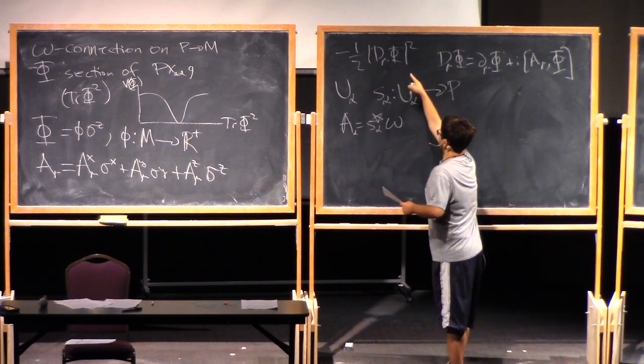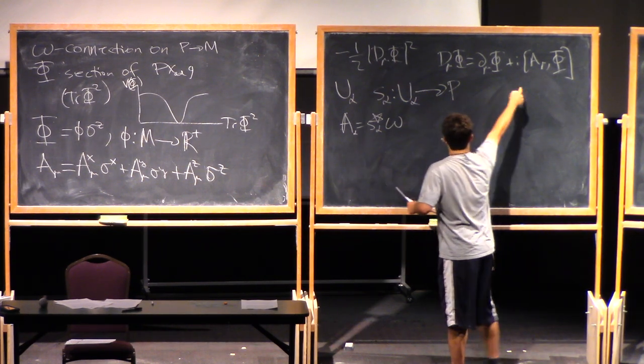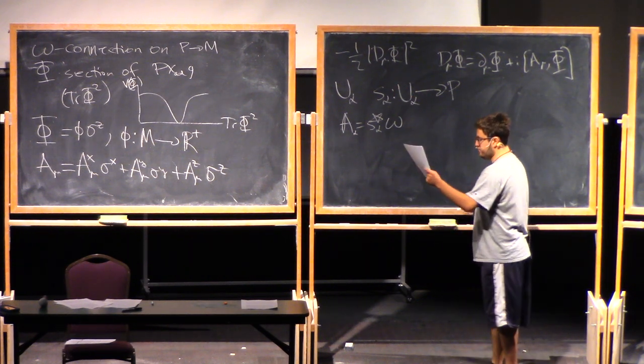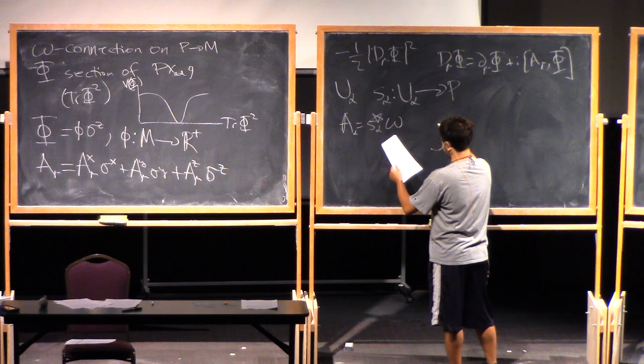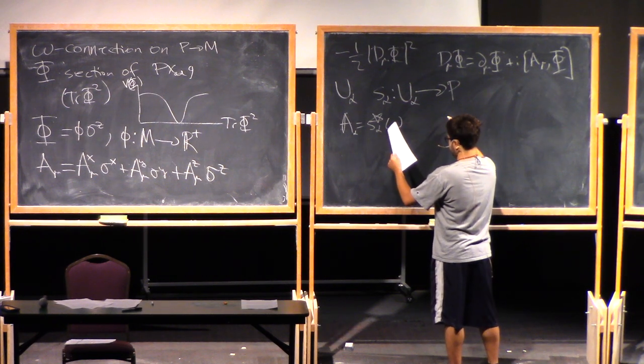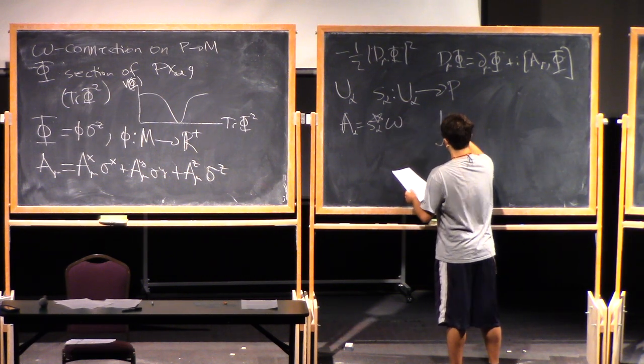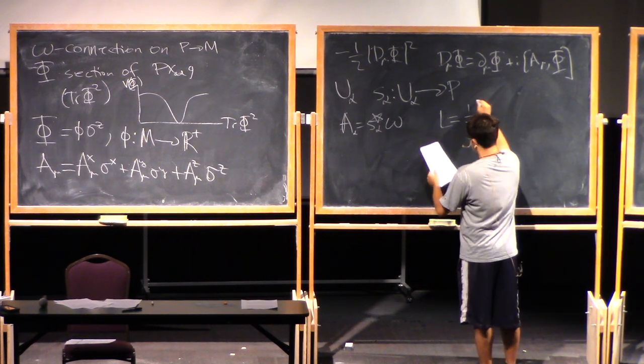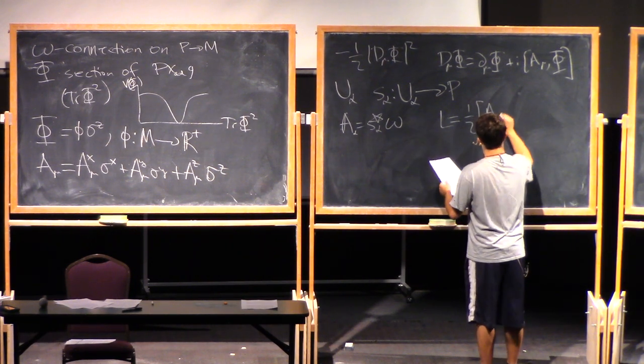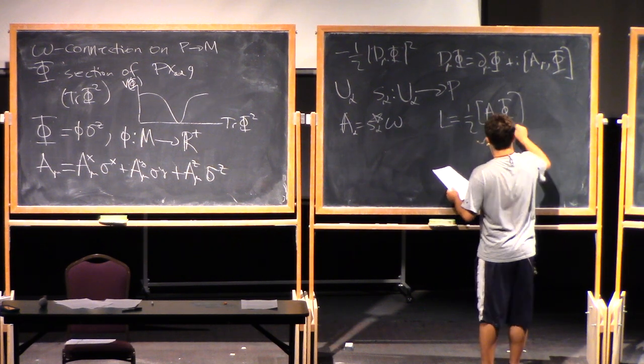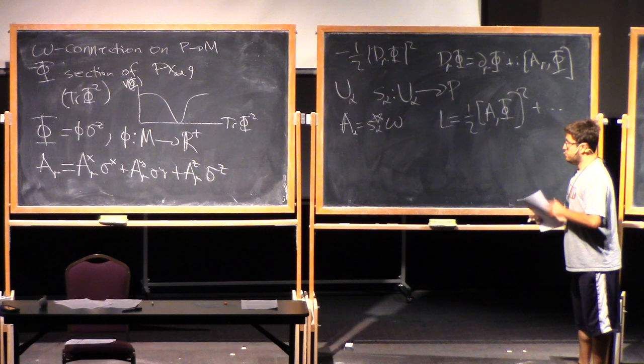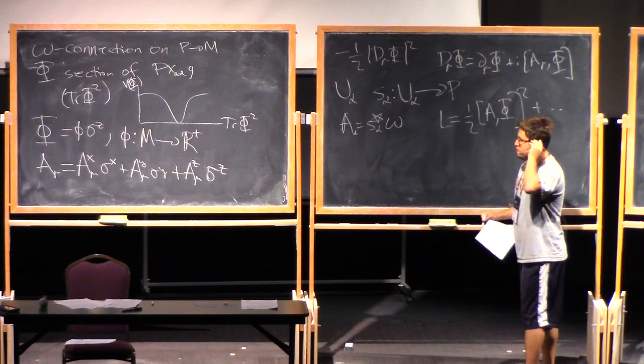Okay, so what is this term when squared in here give? It gives a contribution to the potential energy, which looks like this. So the Lagrangian equals a half commutator of A with phi squared plus some other terms. But this is the one that we care about. So we just plug those two expressions for phi and A.